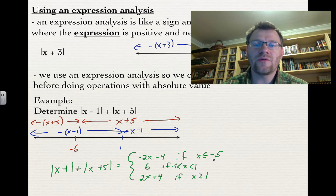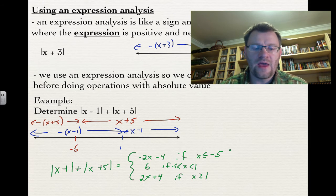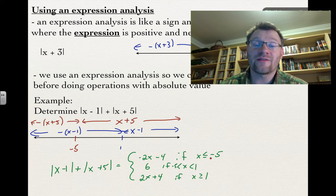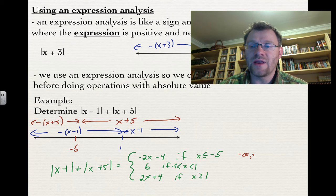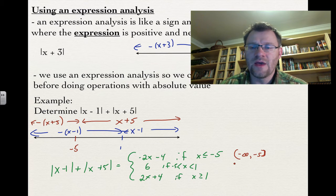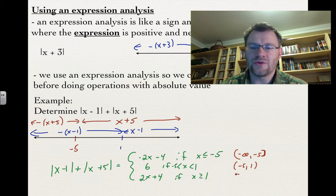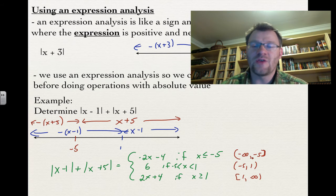You can also write these answers in interval notation. Instead of x less than negative 5, write (−∞, −5] with a square bracket because there's an equal sign. The middle case is written as (−5, 1), and the last case as [1, +∞). You may see answers written this way in the textbook.